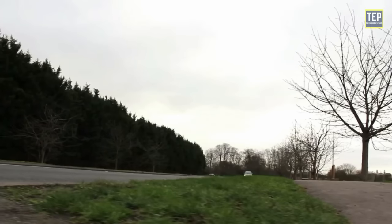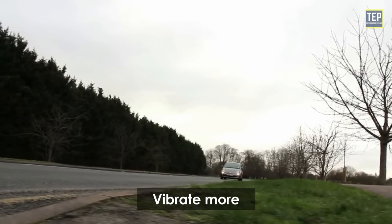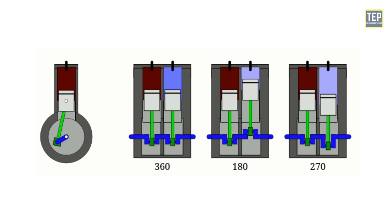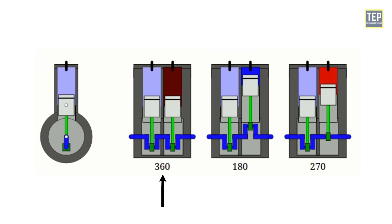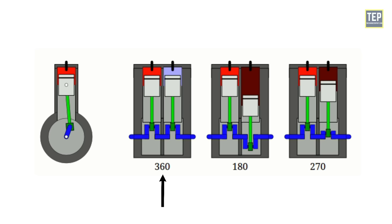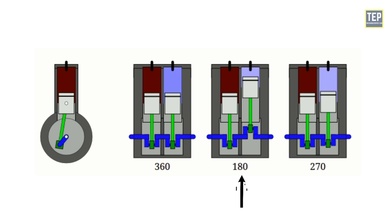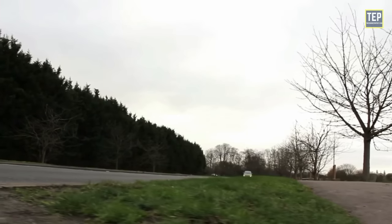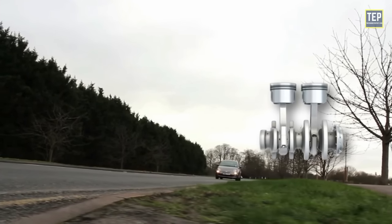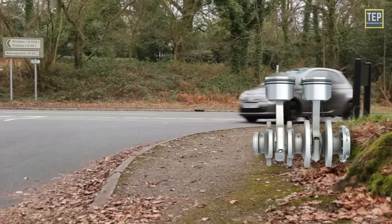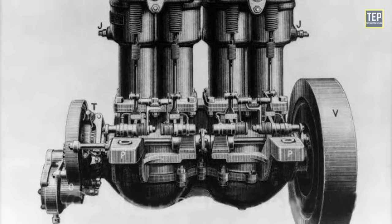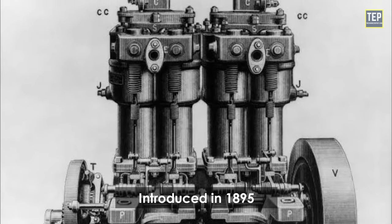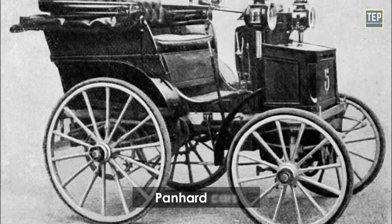A significant disadvantage is that straight twins tend to vibrate more because of torsional torque applied between pistons moving in opposite directions and large reciprocating mass in the case of the 360-degree crankshaft. The irregular firing pulse on the 180-degree crankshaft is another reason for vibrations. Although two-cylinder engines are uncommon in cars, the straight twin layout has been used for several automobile engines over time. The first known straight twin engine was a variant of the Daimler Motors Phoenix engine introduced in 1895, used in Panhard cars.